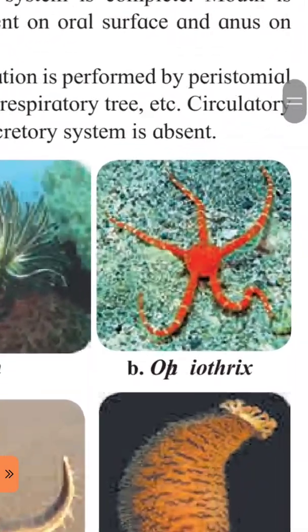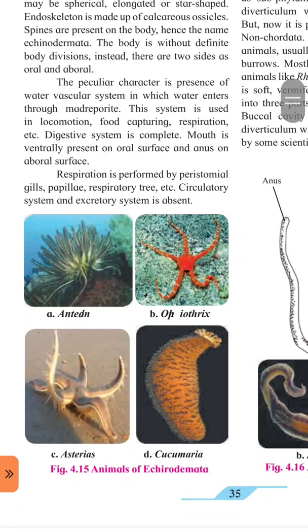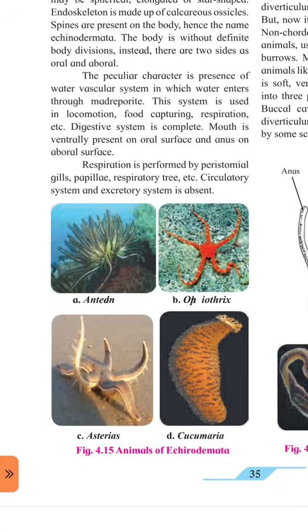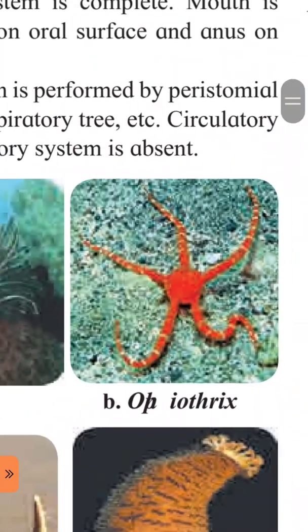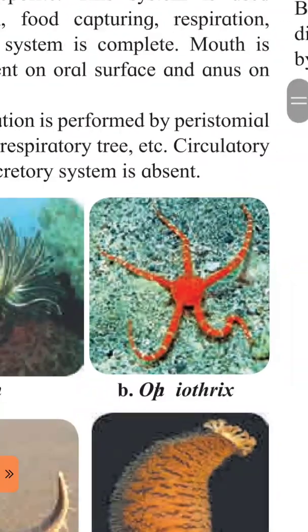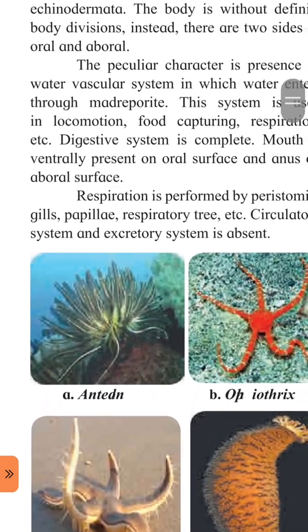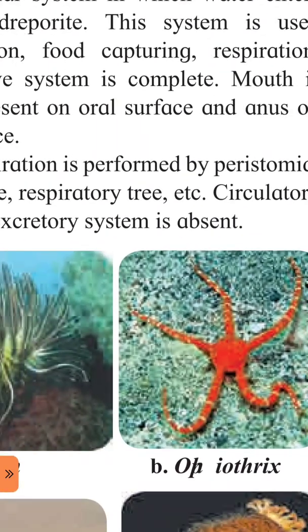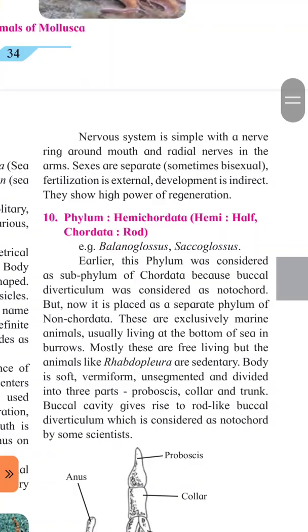Radial symmetry — if they cut, it can be divided five times equally. In this phylum, the body has a water vascular system — water vascular system is used for locomotion. Food capture bhi water vascular system ke dwara hi karte hain. Digestive system complete hai — okay bachcho, samajh mein aaya.